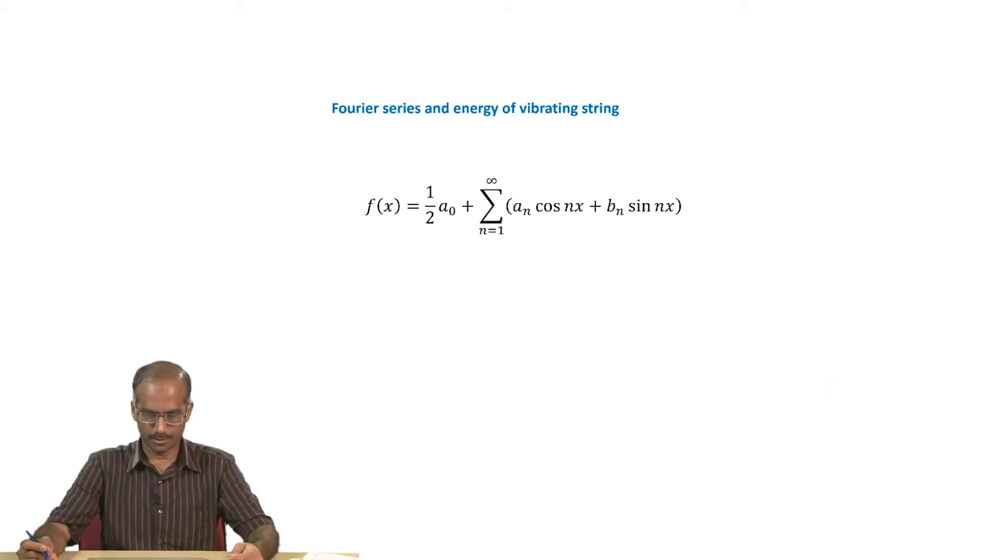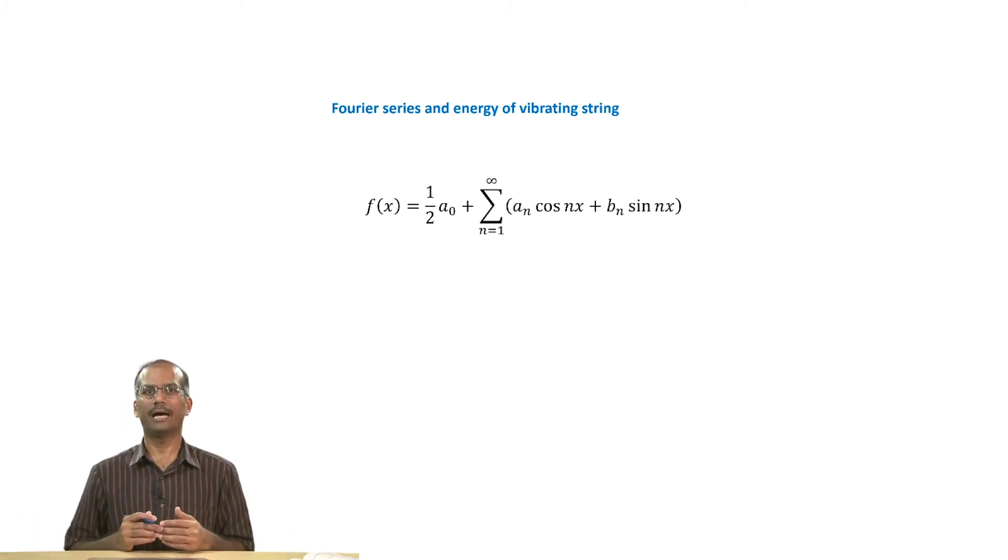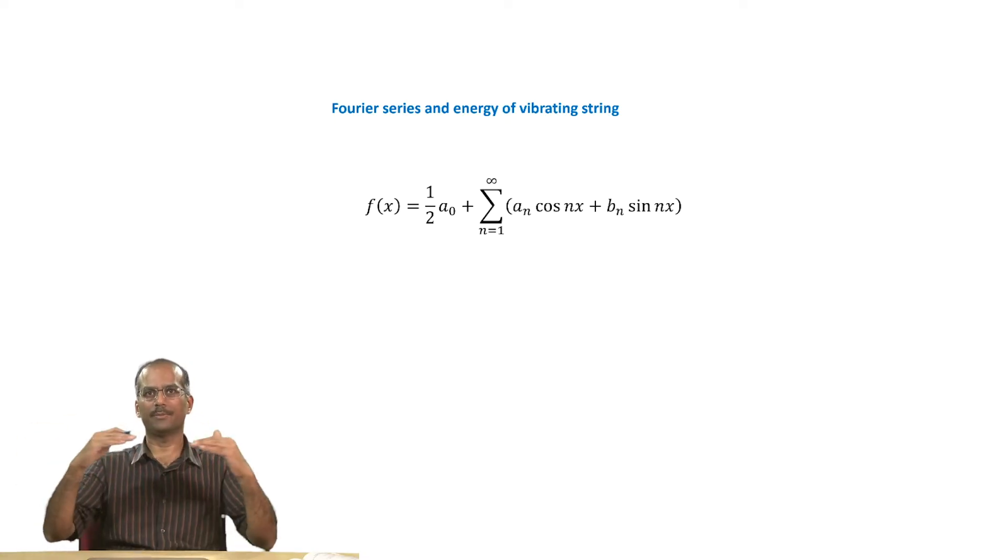Welcome to the third lecture this week. Since the beginning of this week, we were looking at the Fourier series. I have written down this standard Fourier series formula. This first term half a_0 tells you the average of your function f(x), and the rest of the infinite terms tell you the oscillations about that level.